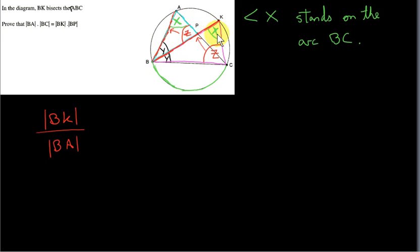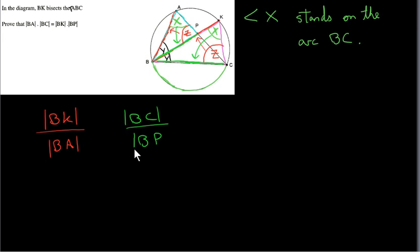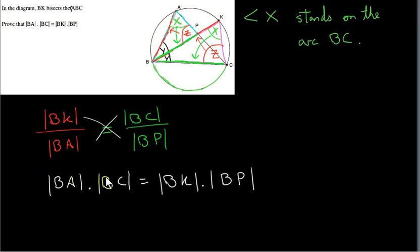Let's take the corresponding sides to angle X. This side corresponds to this side here. So in the purple triangle, we find that BK divided by its corresponding side in the blue triangle, which is BP, gives the same ratio. So in the numerator we have sides belonging to the large triangle — the purple triangle — and in the denominator we have sides belonging to the small triangle — the blue triangle. So cross-multiplying gives us our result.